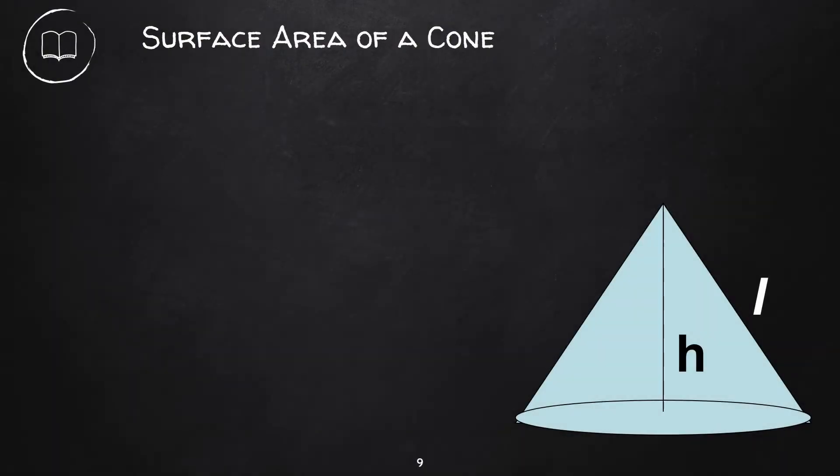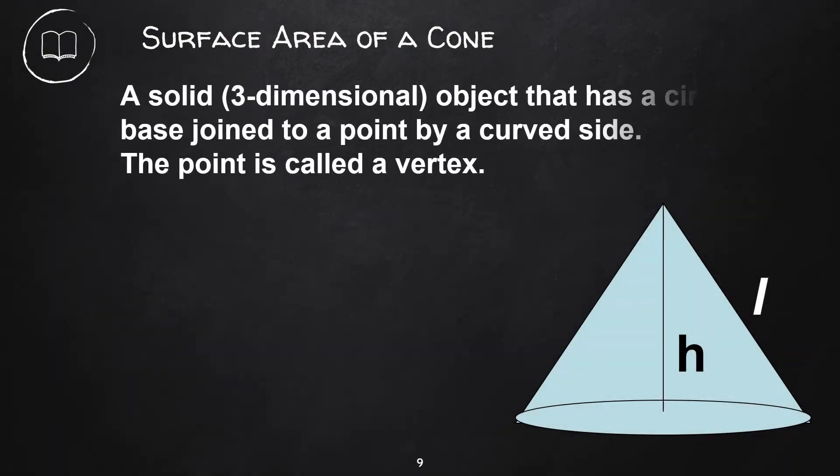This is a cone. A cone is a solid, three-dimensional object that has a circular base joined to a point by a curved side. The point is called a vertex.